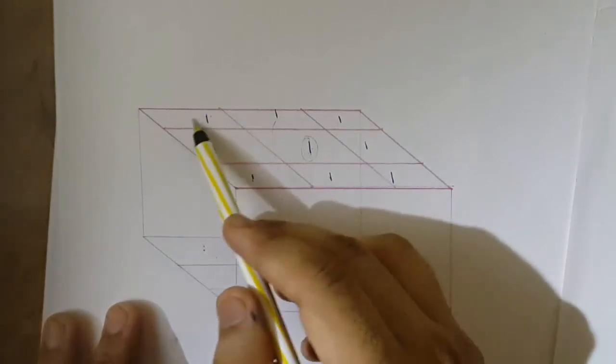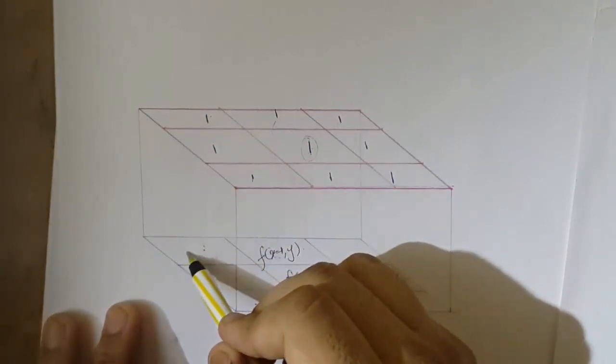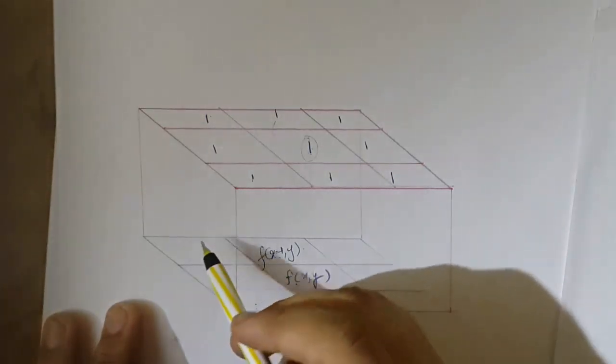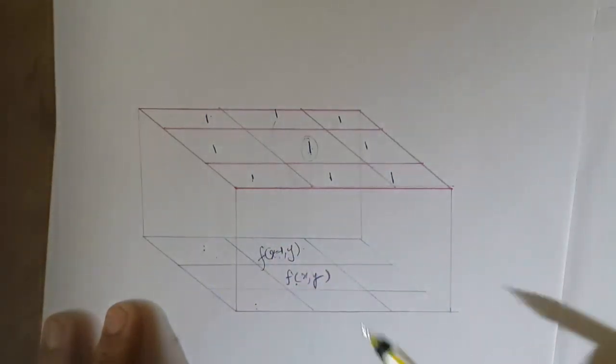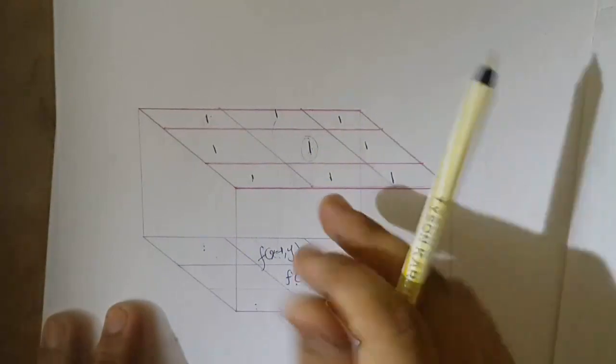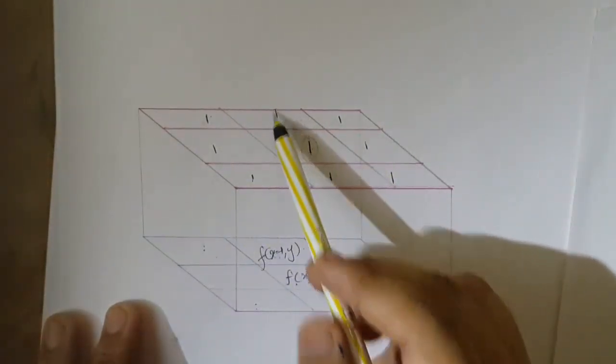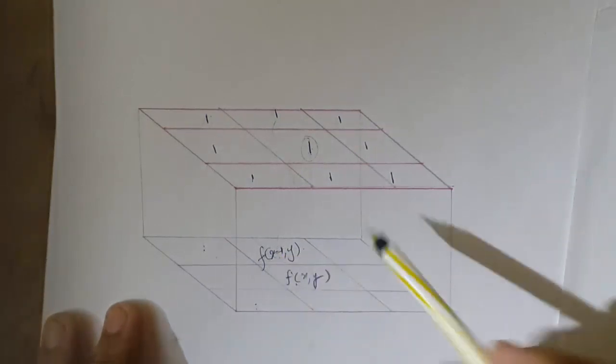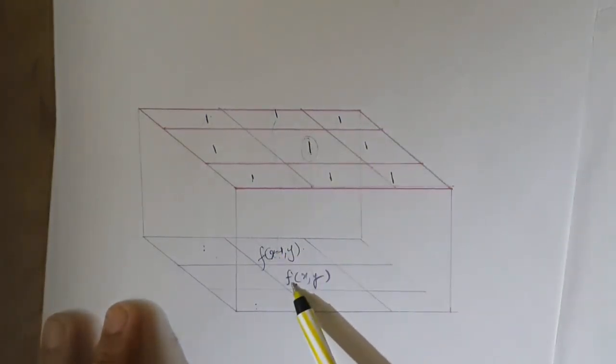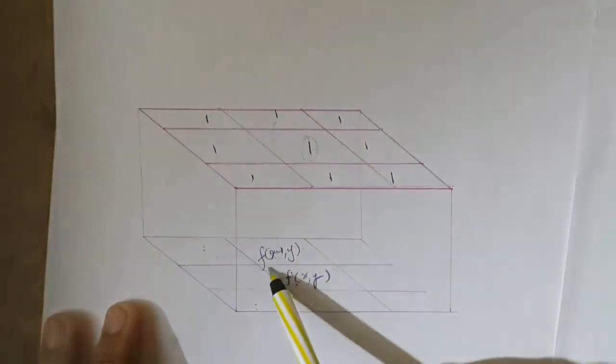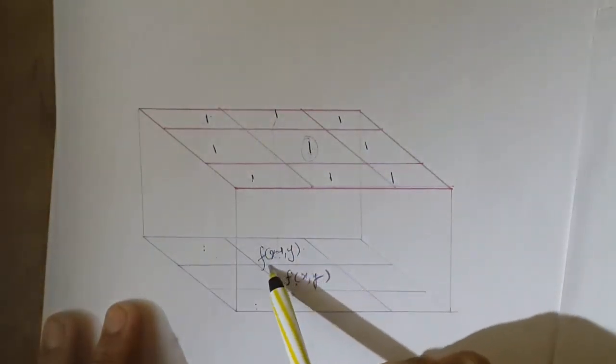This is called literal imposition. Every time I impose a mask, I multiply the values. This one will be multiplied with f(x,y), this one with f(x-1,y), and so on.